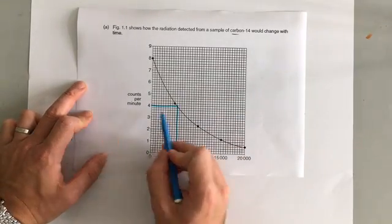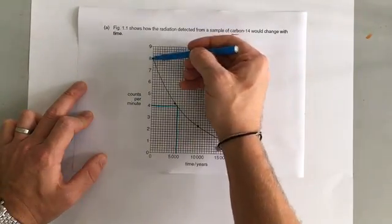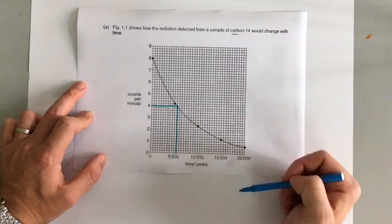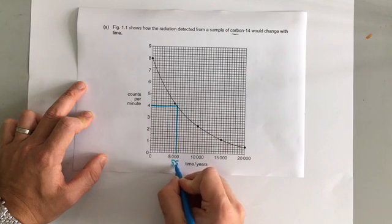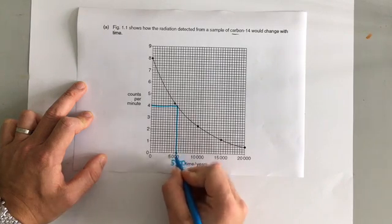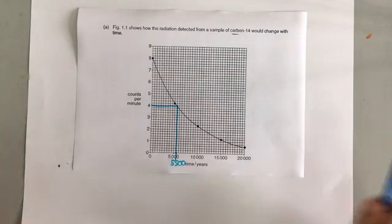And here you've got the amount of time it takes to go from eight counts per minute to four counts per minute, and that time is 5,500 years. And that is how you calculate half-life from a graph.